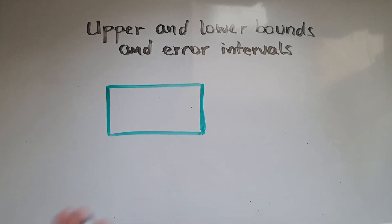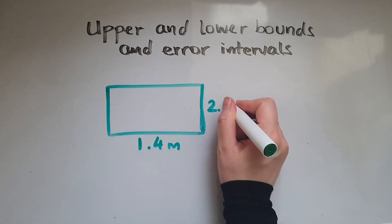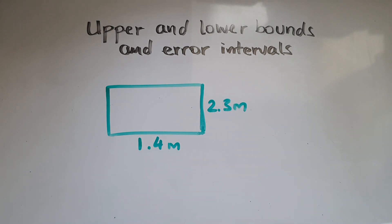And the dimensions of this rectangle have been rounded. At the moment, we've got 1.4 meters and 2.3 meters. They've been rounded to one decimal place. And we're asked to find the greatest possible area of this rectangle with the original dimensions.